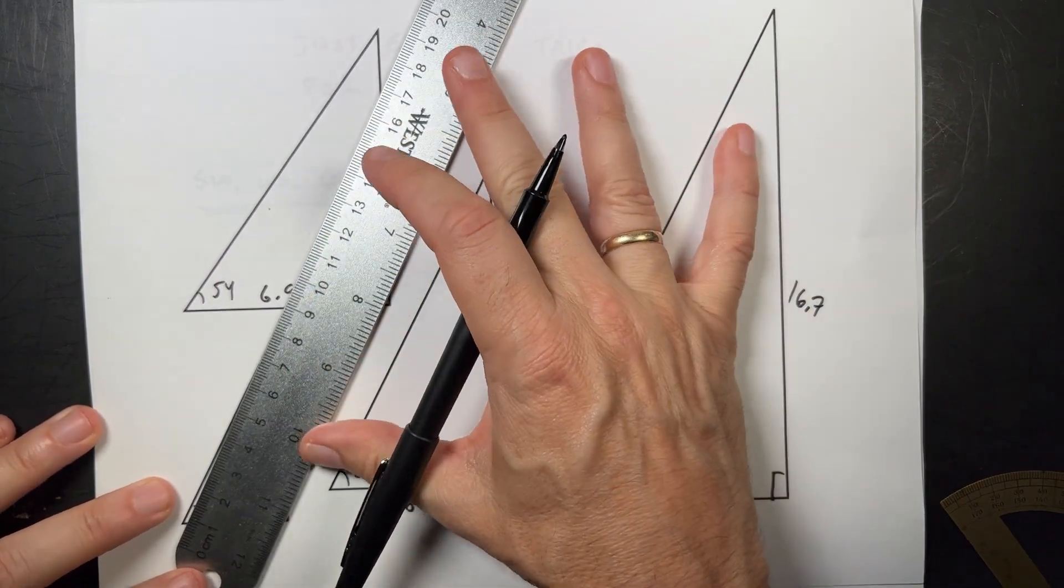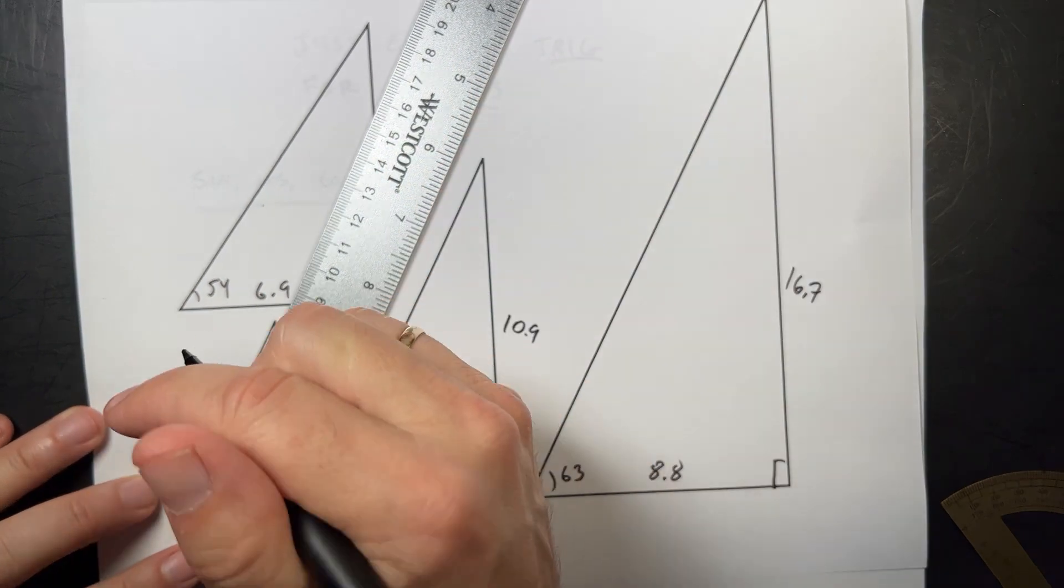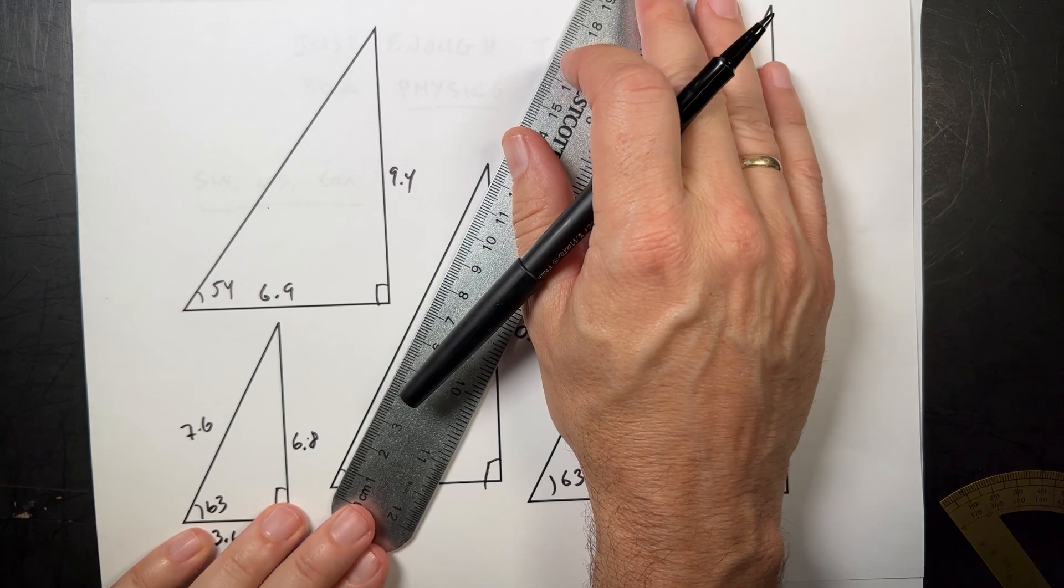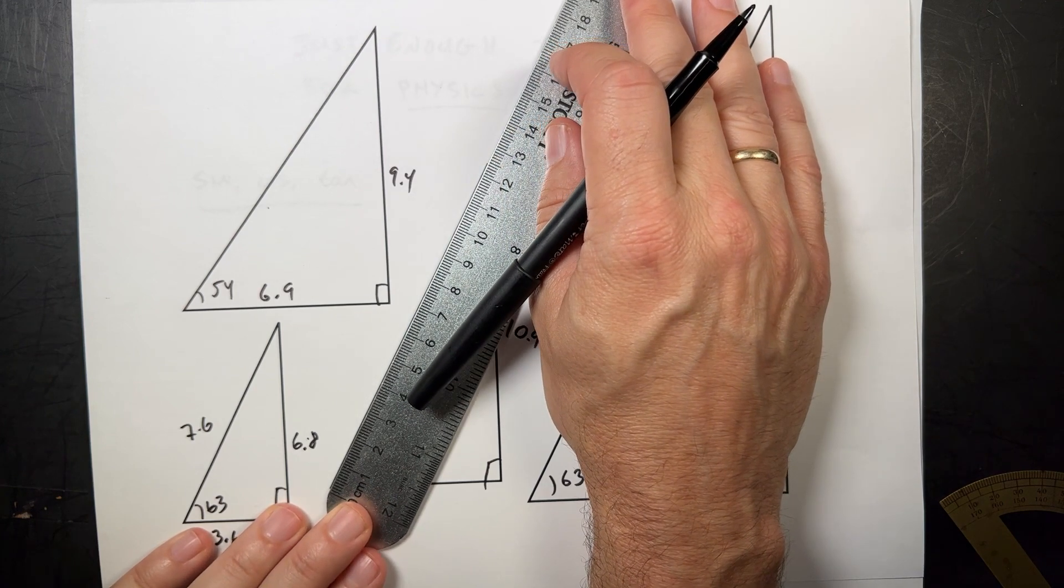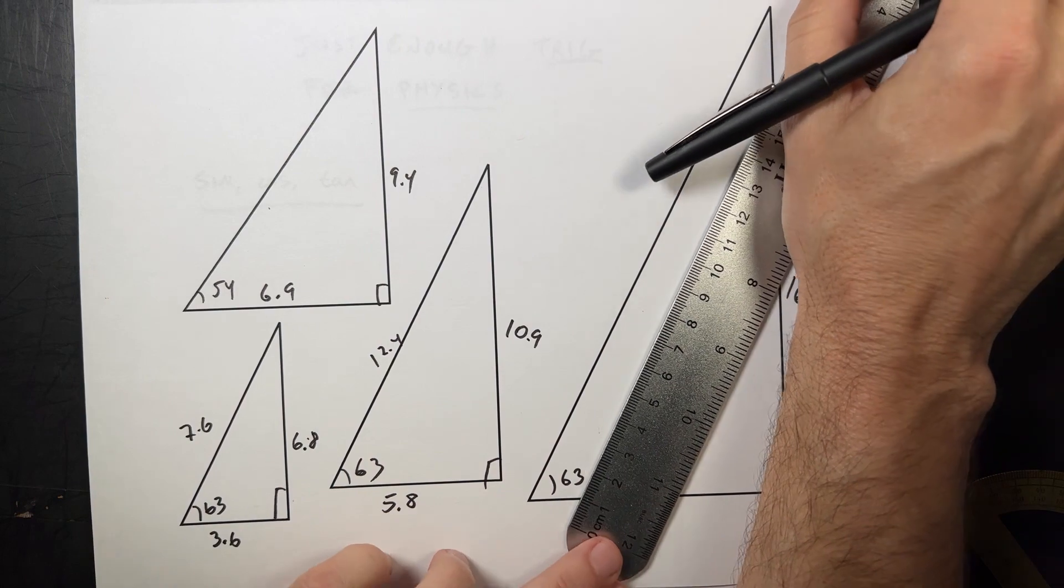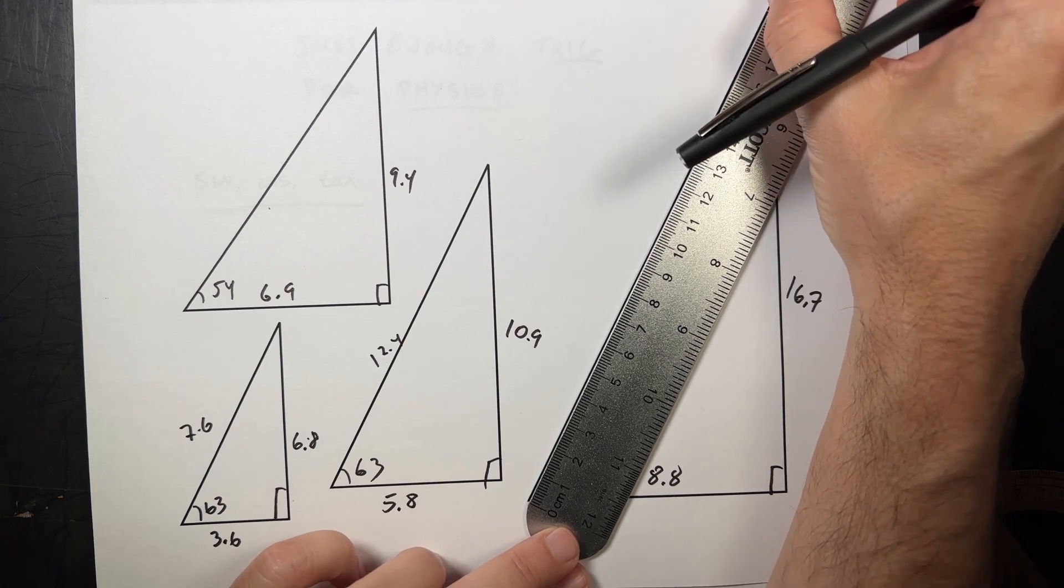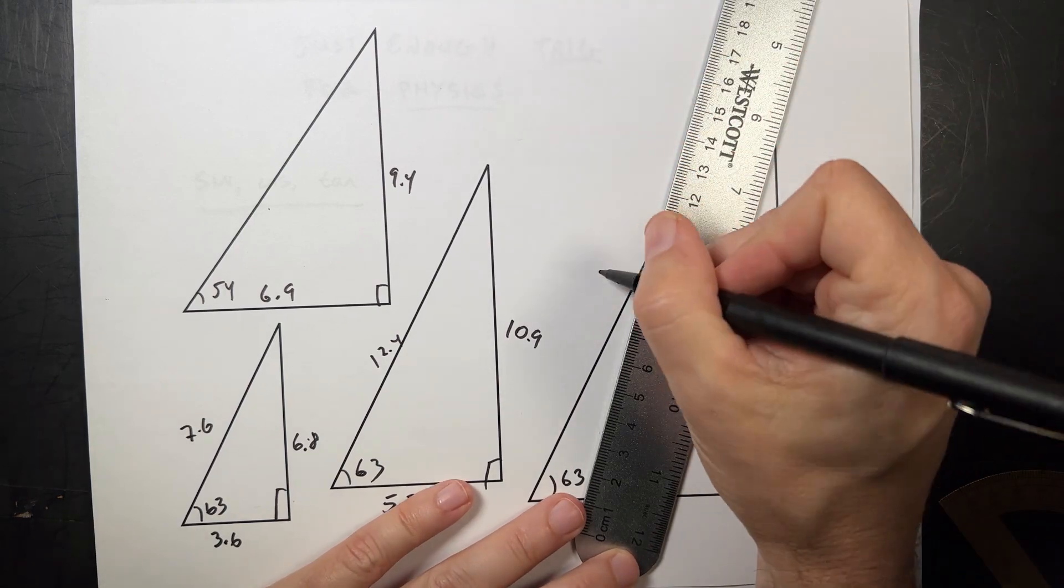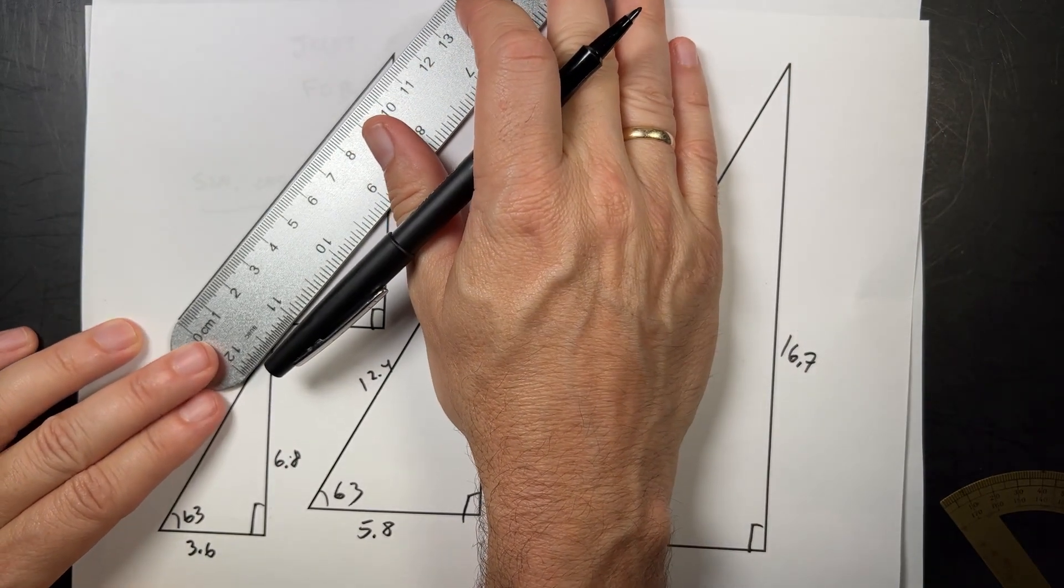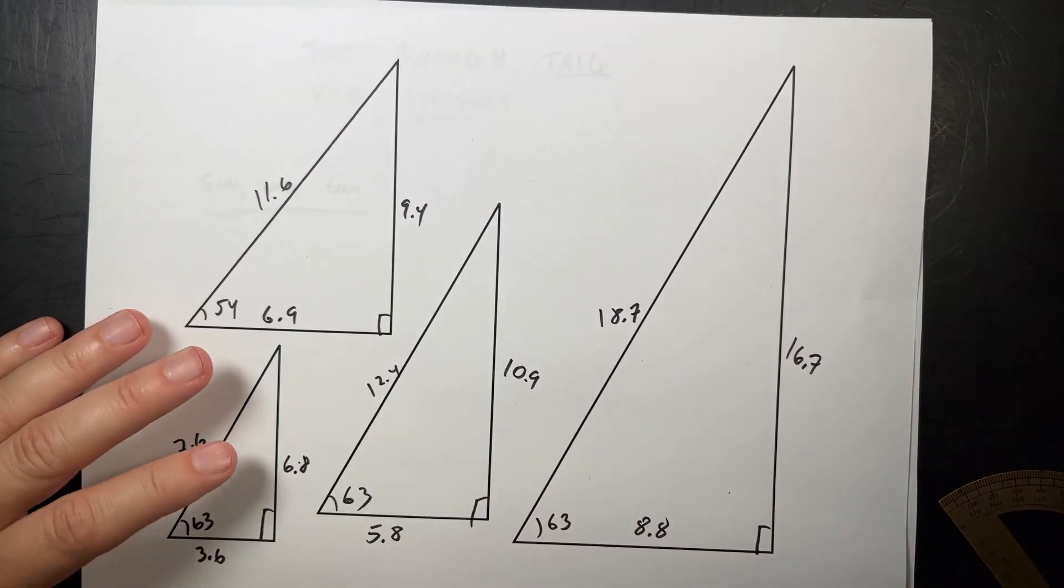Now I'm going to measure all the hypotenuses. What's the plural of hypotenuse? Hypotenuni? I don't know. So that looks like 7.6. Trust me, this is going to make a lot of sense when I'm done. And yeah, I could have done this beforehand. 12.4. Well I've got two more to go. 18.7. And then one more. I know you're thinking this is fun. 11.6. Okay. Now.